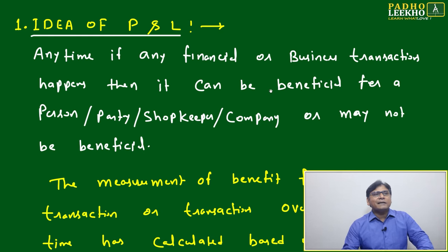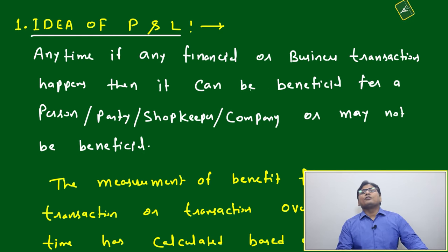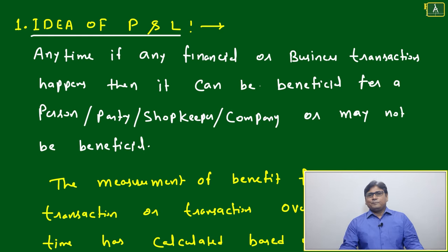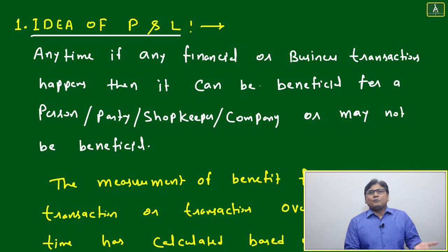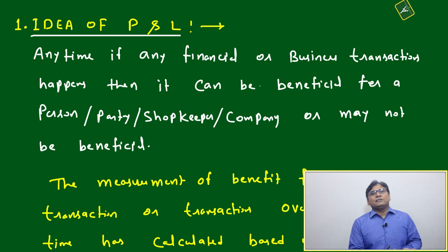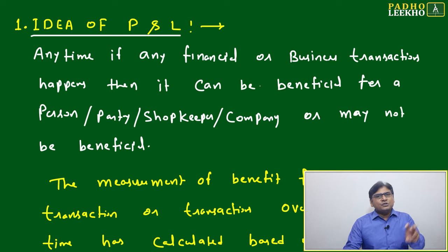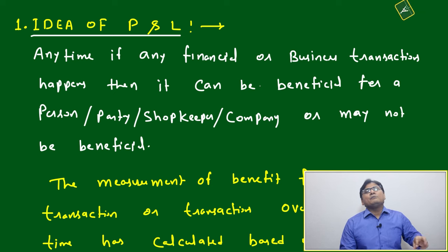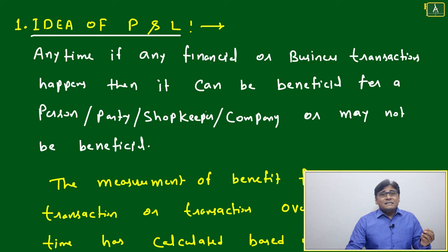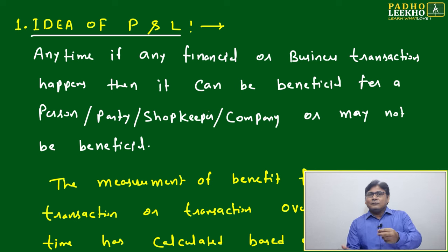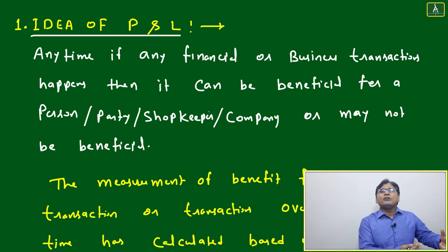The first thing we have to understand is the idea of profit and loss. Profit means if you are gaining more than your investment, it is profit. If you are gaining less than your investment, it is a loss. This is a simple calculation, but based on the situation and number of transactions, it can become more complicated.